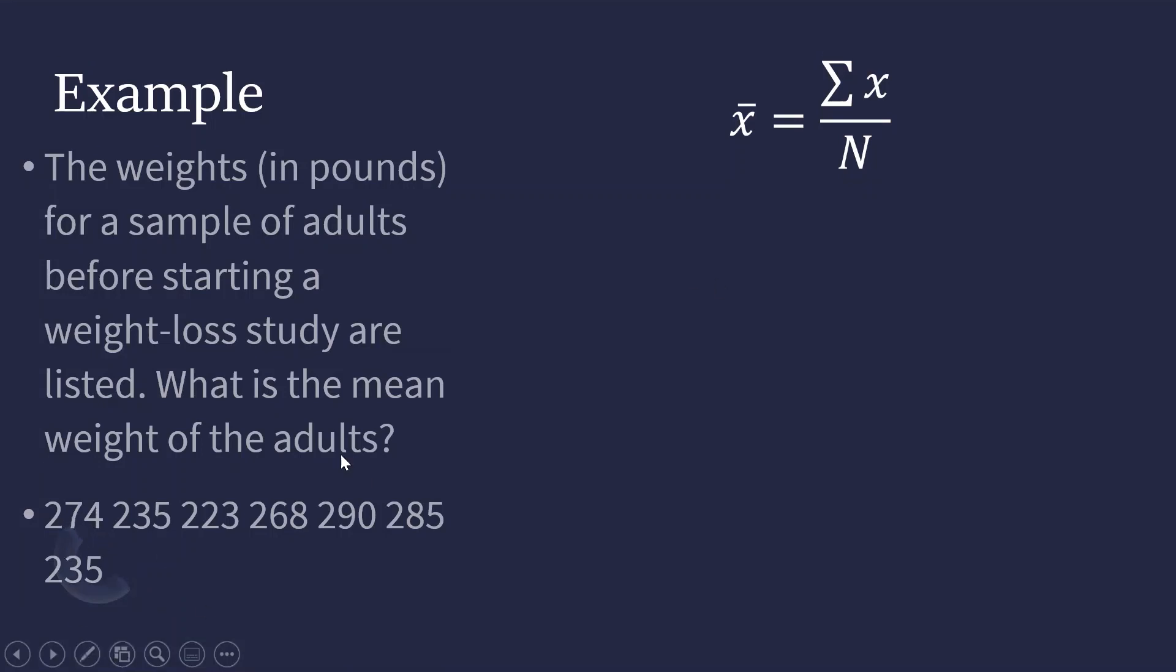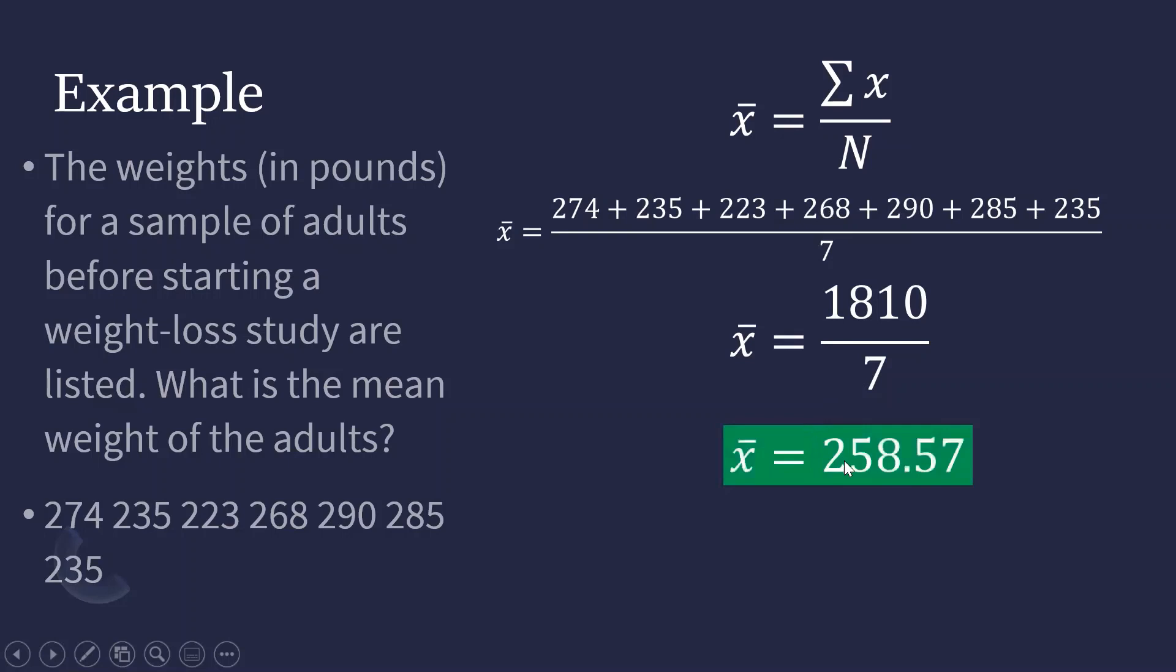All we need to do is add these 7 data entries divided by 7. That is 274 plus 235 plus 223 plus 268 plus 290 plus 285 plus 235 divided by 7. This equals 1810 divided by 7, which equals 258.57. The mean weight of adults is 258.57.